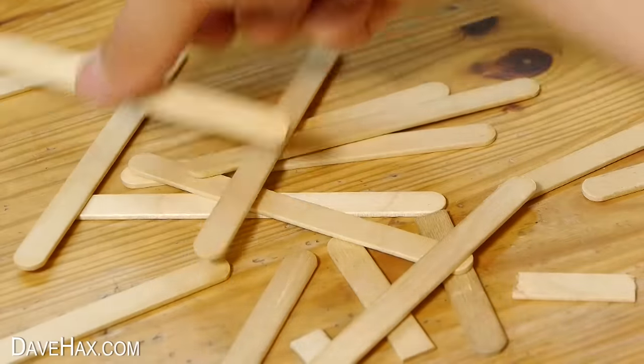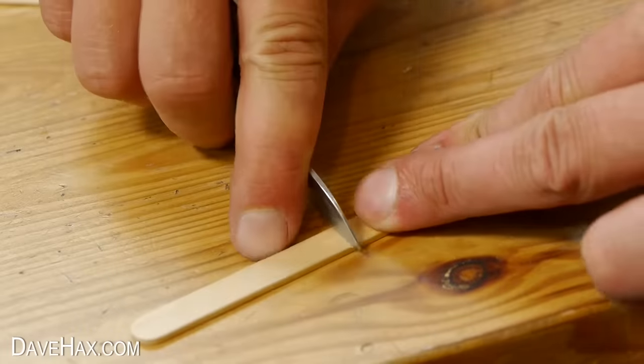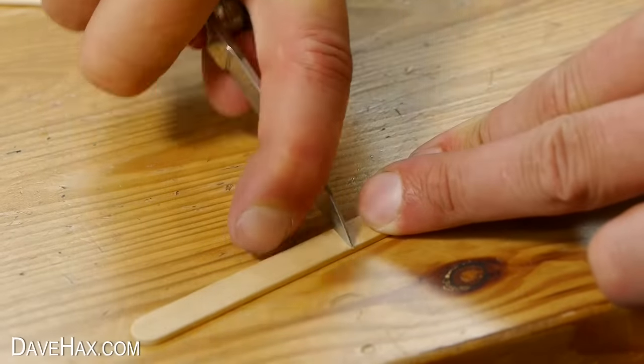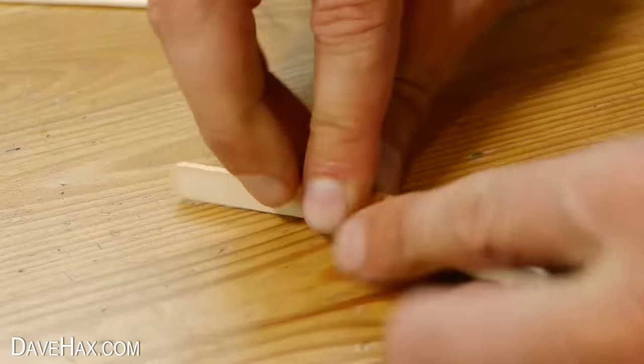Start by taking a stick, measure it and use a knife to cut it in half. If it's too hard to cut all the way through, you can score it and it should snap on the line.